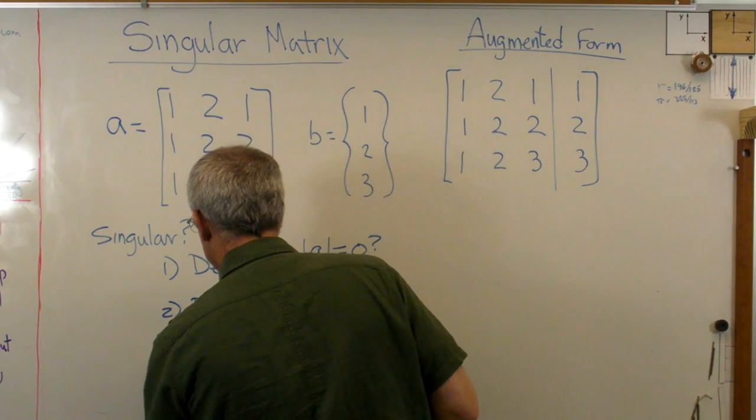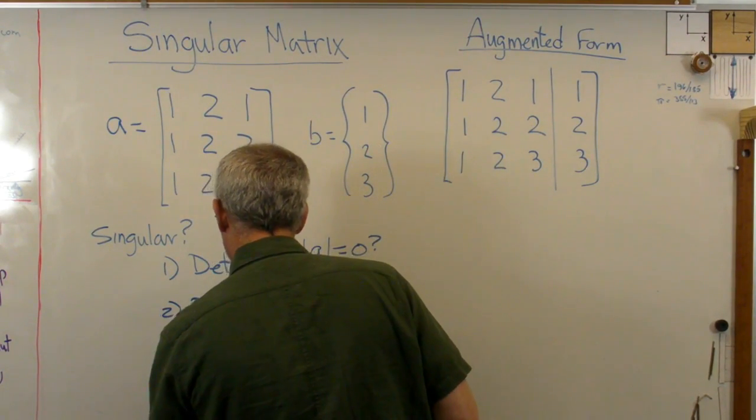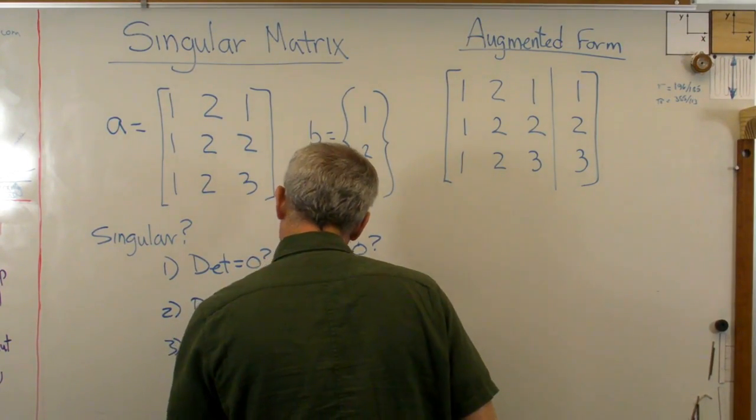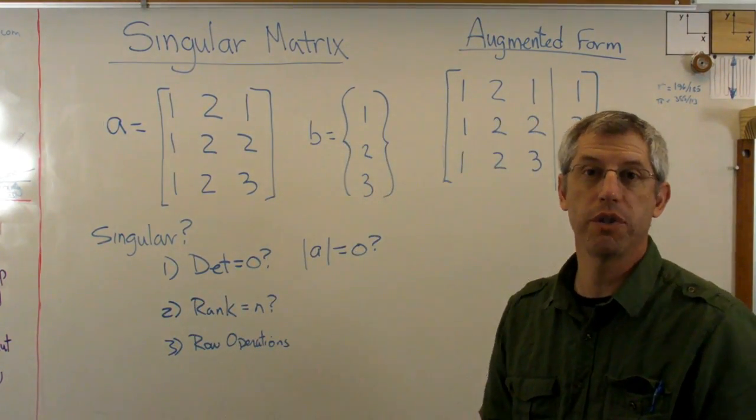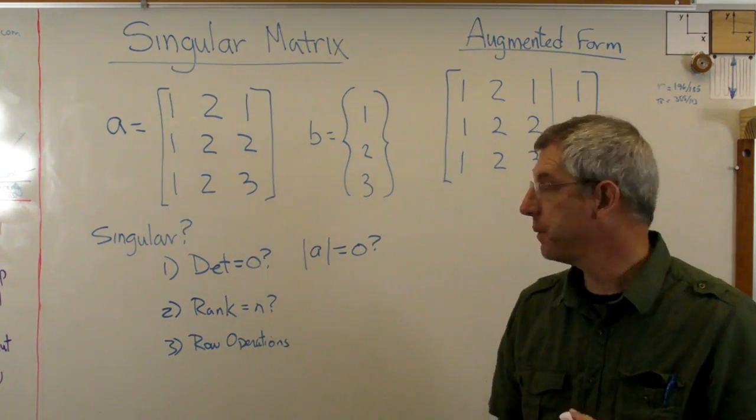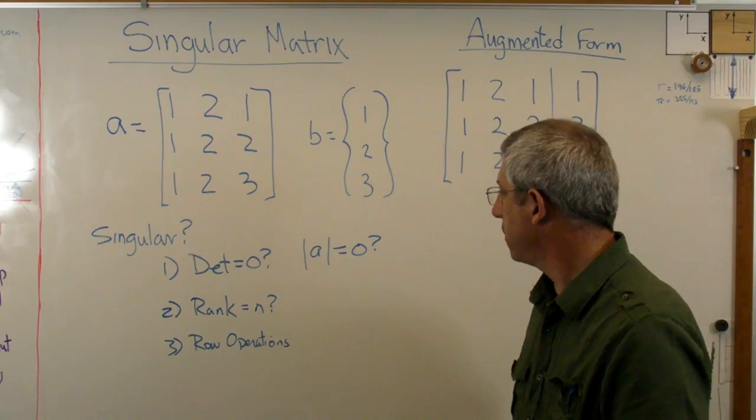And the third one, this is oftentimes how we find it out, is by row operations. You try to solve this problem using row operations, and you wind up with a row of zeros, and that's what I did. I wound up with this third row being all zeros. So those are the three possibilities.